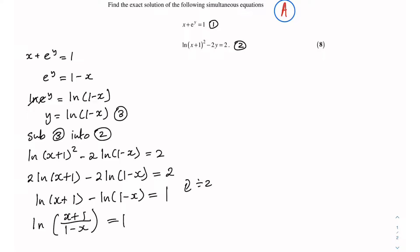Now I can get rid of the ln on the left hand side by applying e to both sides — e takes everything to its power. So e to the power ln((x + 1)/(1 − x)) equals e to the power 1. Now e to the power 1 is just e, and on the left hand side the e and ln cancel, producing the equation (x + 1)/(1 − x) equals e.